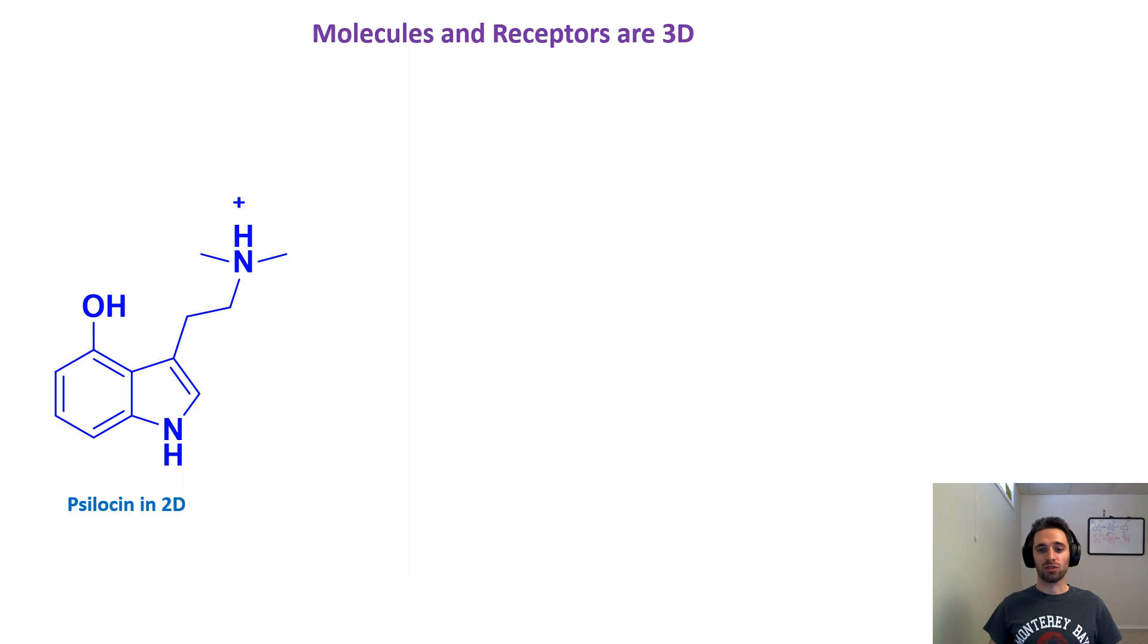You'll notice that it has this tryptamine backbone, and it also has a positively charged amine because inside of a cellular environment at physiological pH, that amine becomes protonated.